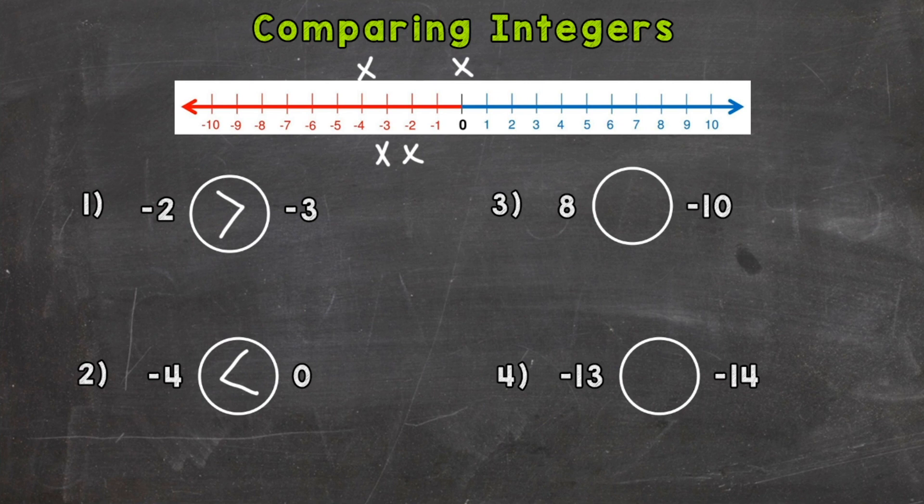So we would read this from left to right. Negative 4 is less than 0. And let's think temperature. Which is warmer? Negative 4 degrees or 0? Well, 0 is.